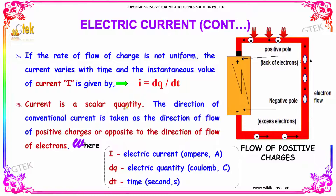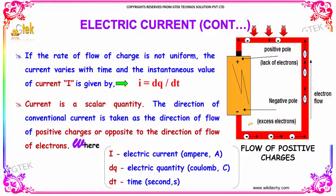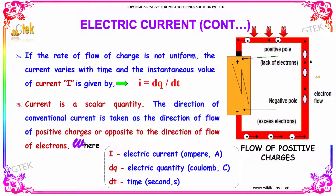The current is a scalar quantity. The direction of the conventional current is taken as the direction of the positive charges, or opposite to the direction of the electrons.